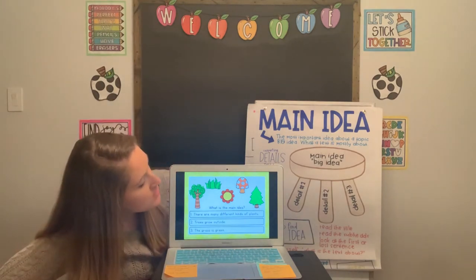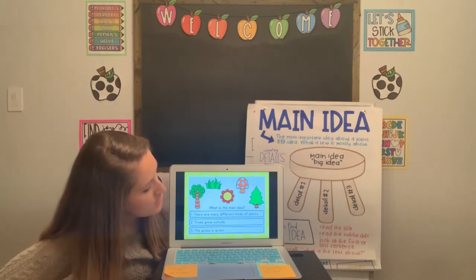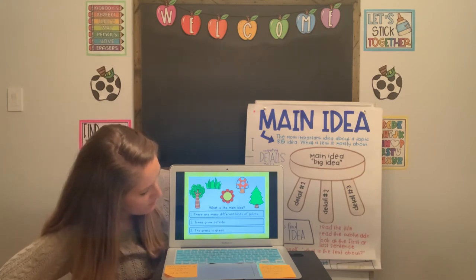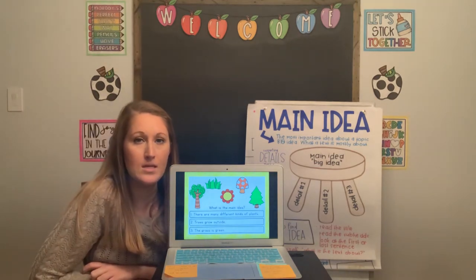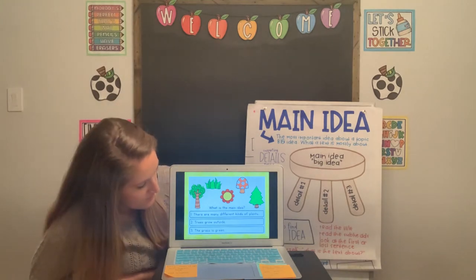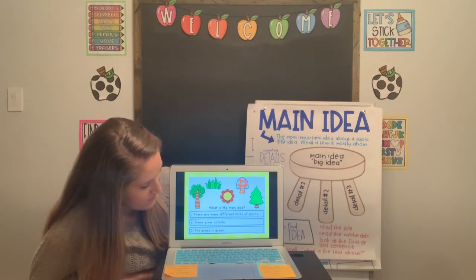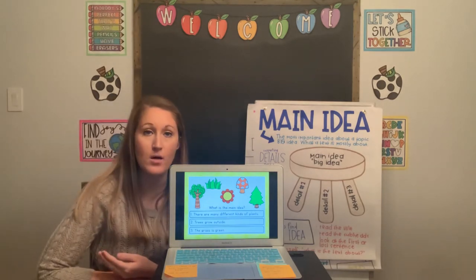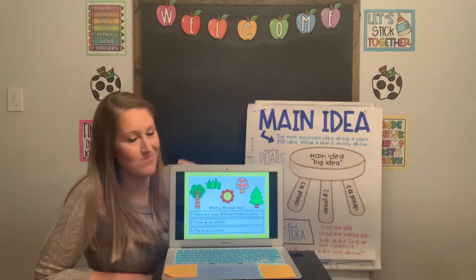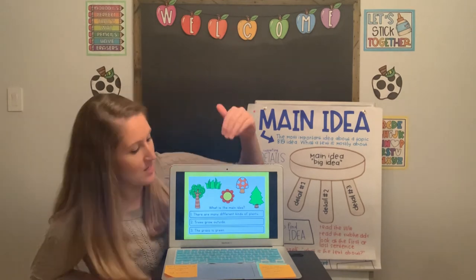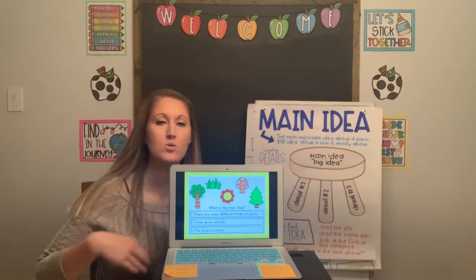We see a tree, grass, a mushroom, a flower, and a pine tree. What is the main idea? One: there are many different kinds of plants. Two: trees grow outside. Three: the grass is green. The answer is number one — there are many different kinds of plants. Trees grow outside is a fact about trees, and the grass is green doesn't tell me anything about the mushroom or the flower or the trees. We're talking about everything all together.